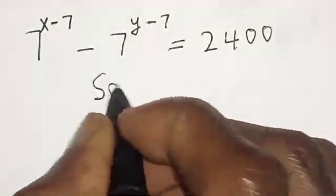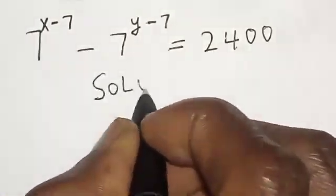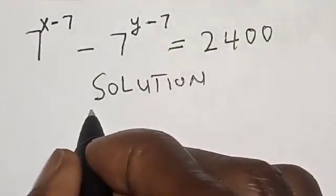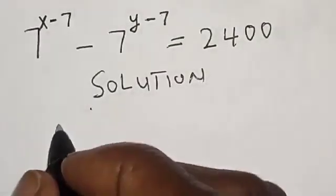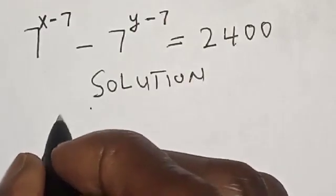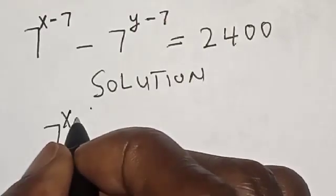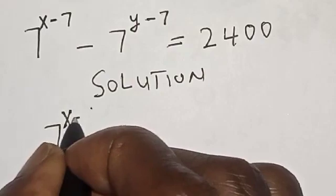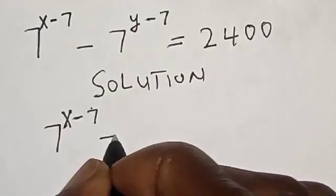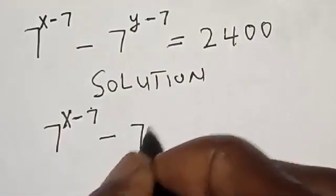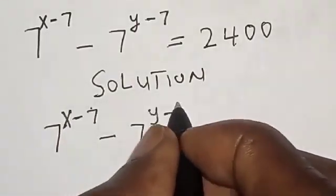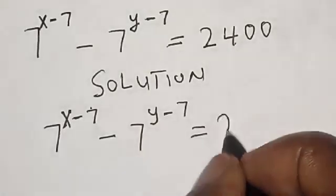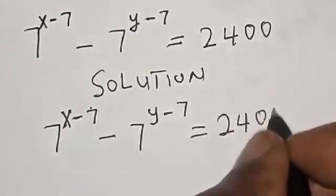Solution. The given equation is: 7 raised to power x minus 7, minus 7 raised to power y minus 7, is equal to 2400.